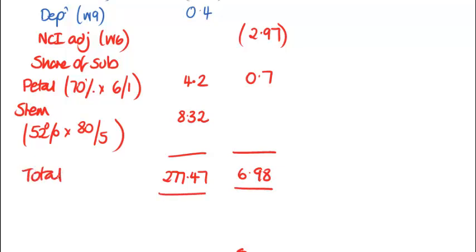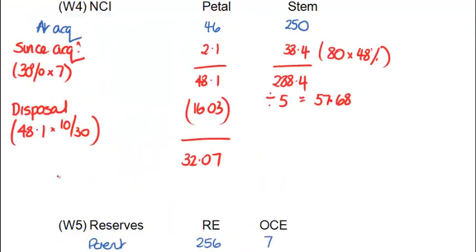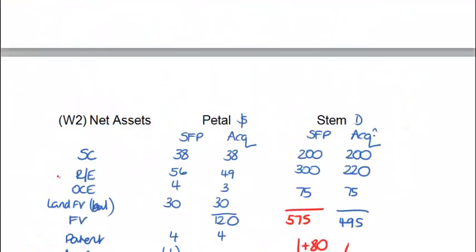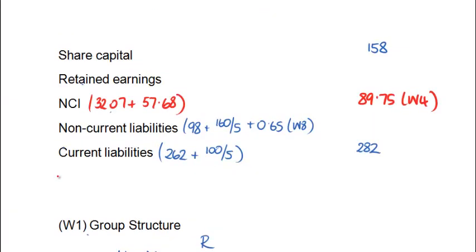We can now work out our totals for retained earnings: 277.47. We do this exactly the same for OCE — but only do this in the exam if you've got enough time. So we've got two totals to slot in now to the face of our statement of financial position. It looks like I've forgotten to put in a line for OCE — I'll put that in now. So retained earnings total, and an extra line for OCE. This is why I always encourage you to leave space between lines just in case you leave something out — it's a lot easier to review and mark if you've created the space in advance.